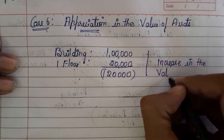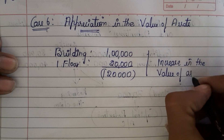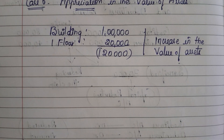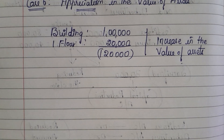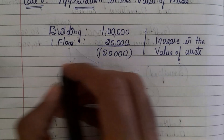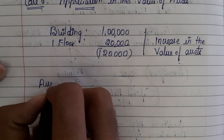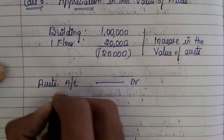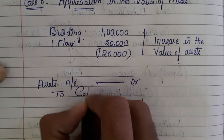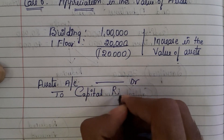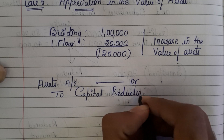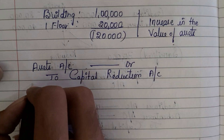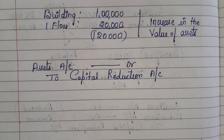Increase in the value of assets is known as appreciation. When the asset value increases, it is called appreciation. To record this, we pass an entry debiting the assets account and crediting the capital reduction account. This is the journal entry we need to pass. Now let us see the question.